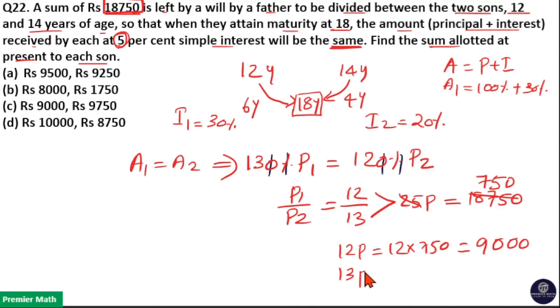Then, 13 part is equal to 13 into 750 which is equal to 9000 plus 750, 9750. So, option C is your answer.